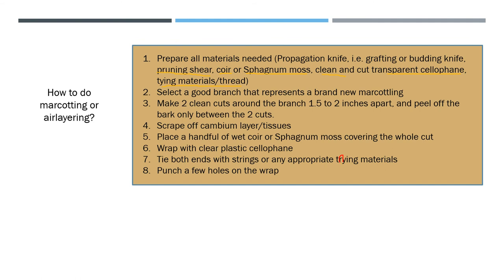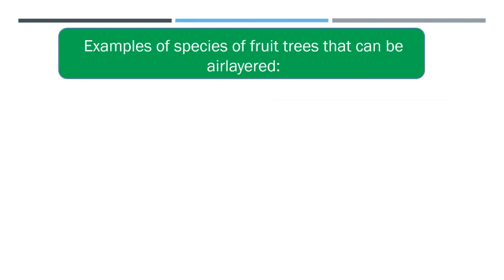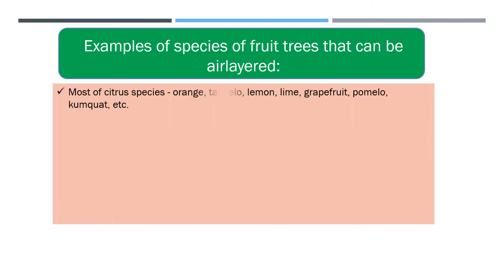After tying, punch a few holes on the wrap to serve as aeration and for water to seep through so the moss can absorb water. Examples of species of fruit trees that can be air layered include most citrus species like oranges, tangelos, lemons, limes, grapefruits, pomelo, and kumquats.